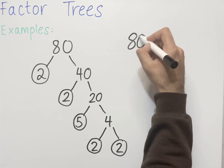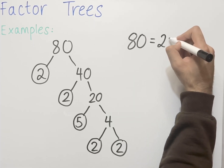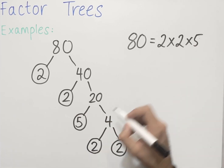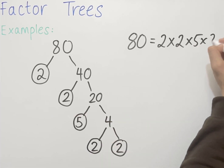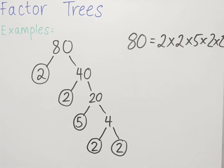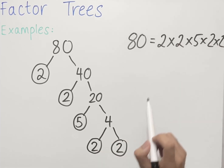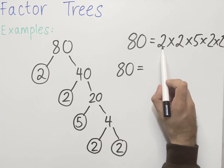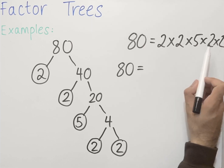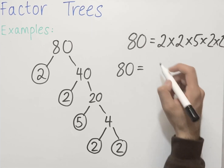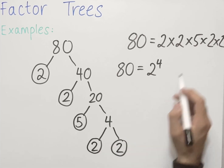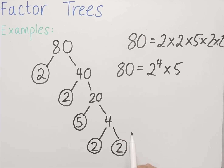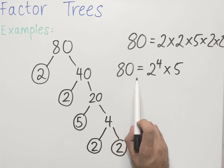So 80 can be written as 2 multiplied by 2 multiplied by 5 multiplied by 2 multiplied by 2. If we simplify this and write it in index form, we have 2 times 2 times 2 times 2, which is 4 lots of 2, so 2 to the power of 4 multiplied by 5. This is equal to 80. We've written 80 as a product of its prime factors.